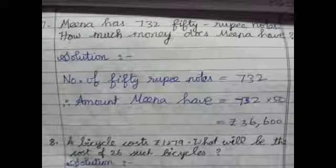So we can write it in the rough column and start with the multiplication with the 5 table. When 0 is there in the 50 you can add it in the answer directly. So 732 multiply by 5, we will get the answer of 3660 and 2 more zeros are there. So the answer is rupees 36,600.